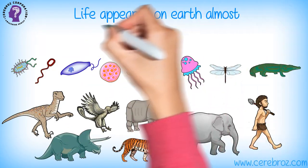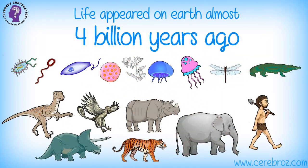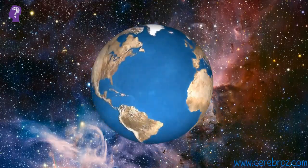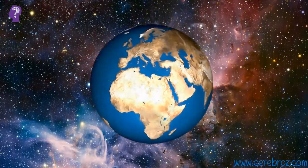Life appeared on Earth almost 4 billion years ago. Origin of life can be understood in the background of origin of Earth and universe.